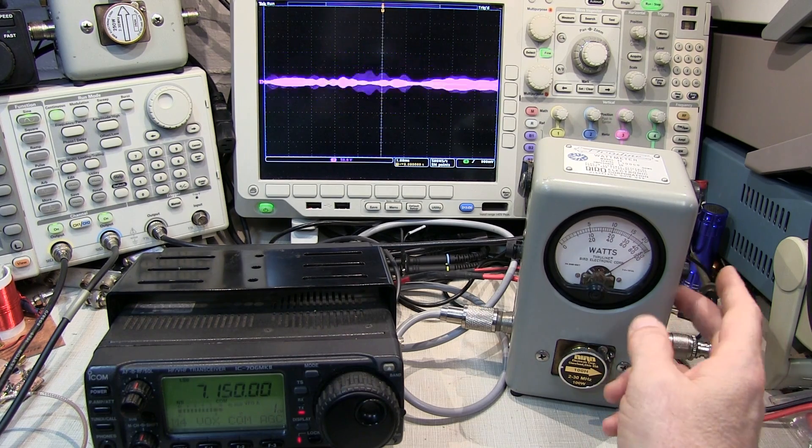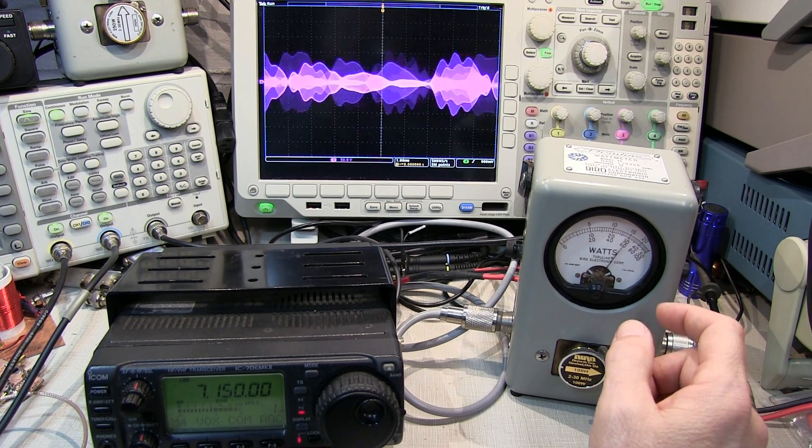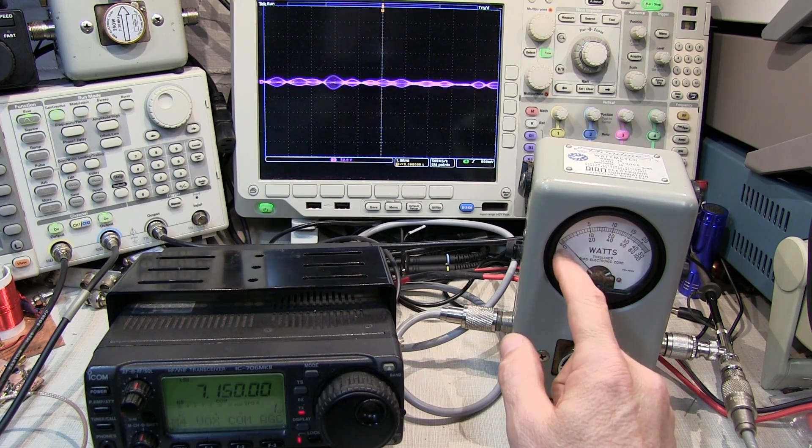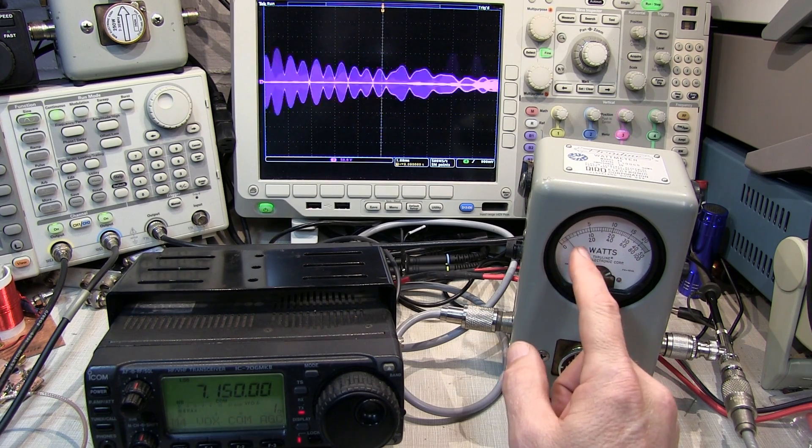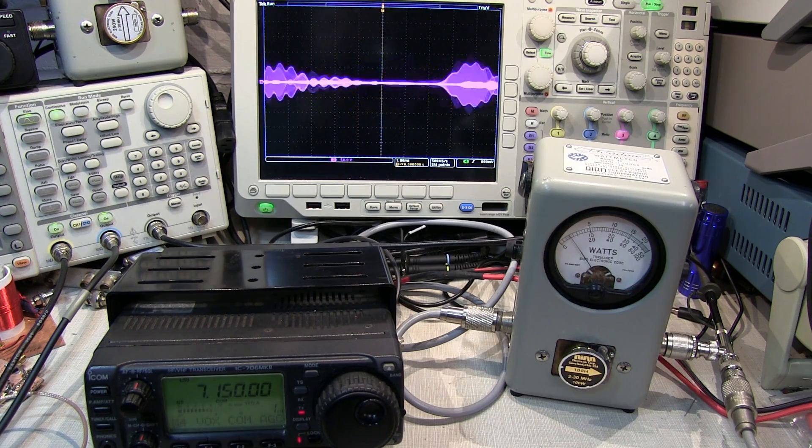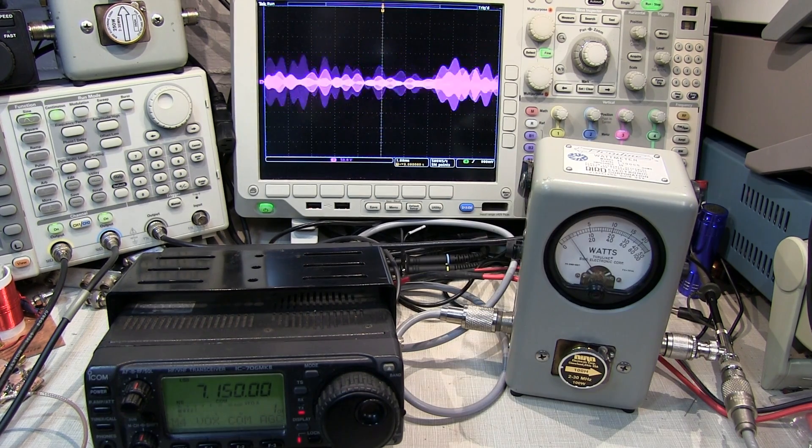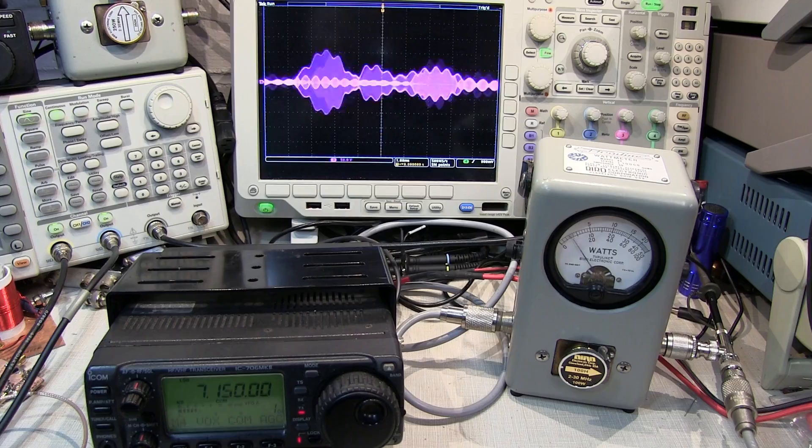So if you don't have a peak responding wattmeter, don't be alarmed that your single sideband signal when you're looking at it is only maybe less than 20% of your peak envelope power. You are likely still getting your full 100 watts PEP out of the rig.